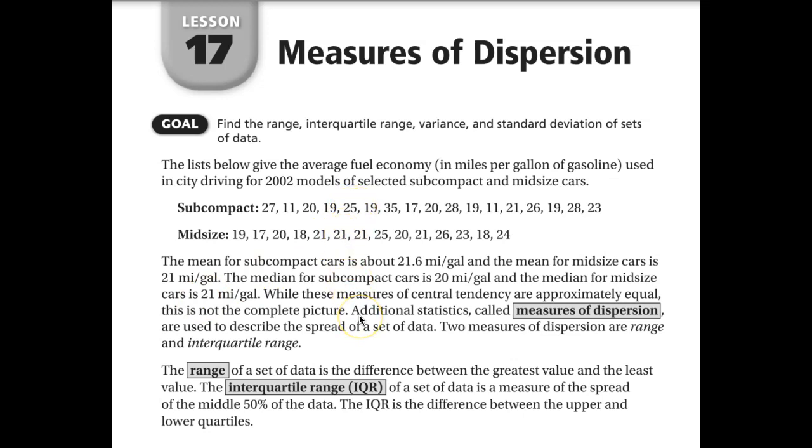If we have the additional statistics called measures of dispersion, we can look at the range and the interquartile range of our data. So the range is going to be the difference between the greatest value and the smallest value, and the interquartile range is going to be the difference of the middle 50% of the data, and it's the difference between the upper and lower quartiles, which you already learned how to find when you did your box and whisker plots.